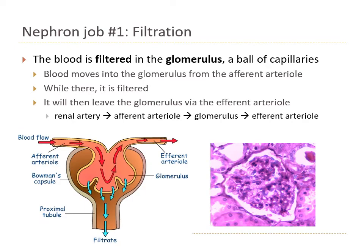The glomerulus is where filtration happens. The glomerulus is a ball of capillaries. Blood comes in through the afferent arteriole, moves into this nest of capillaries, and then moves out through the efferent arteriole. On a microscope image, here is our ball of capillaries, and then this is Bowman's capsule surrounding it, kind of like a cup. So remember the path of blood flow: from renal artery to smaller arteries to the afferent arteriole into the glomerular capillaries, and then out the efferent arteriole — this is where filtration is happening.